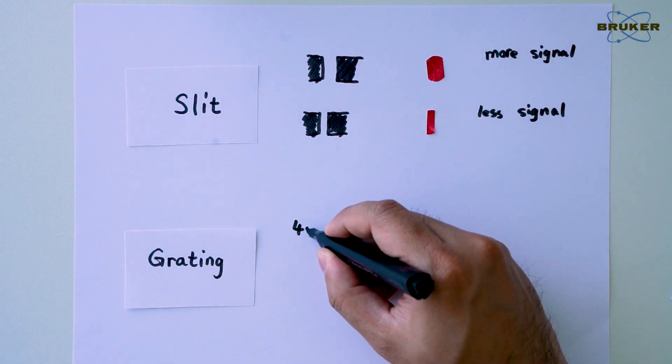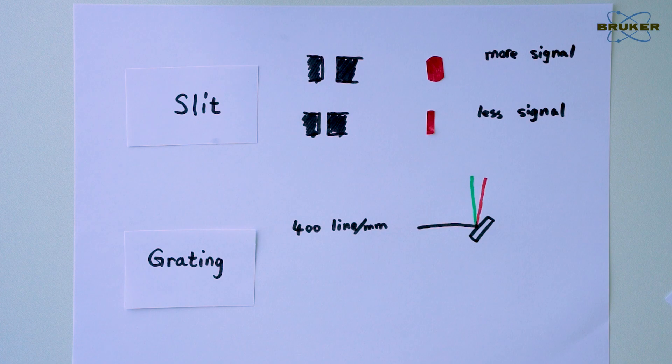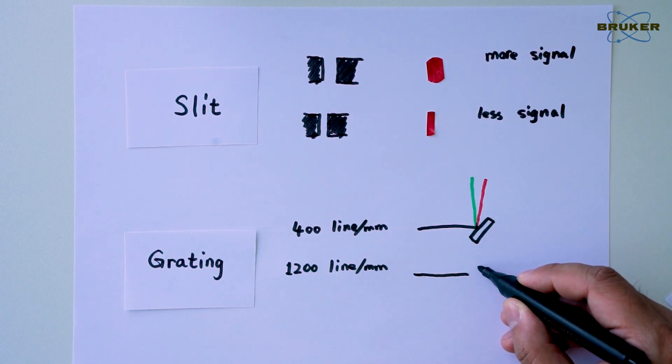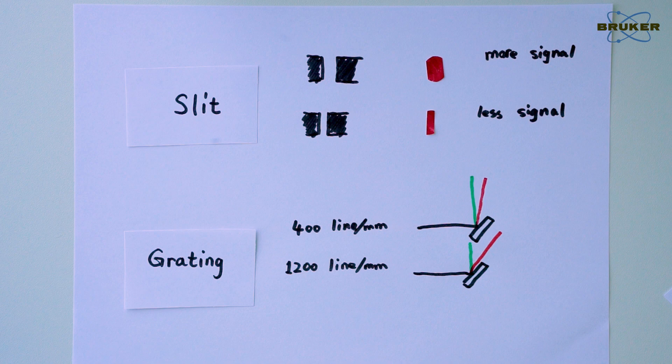We can also change the grating and increase the so-called line density. This spreads the Raman signal over a wider angular range, improving the spectral resolution. But again, less light will reach the individual CCD pixels, and we lose sensitivity.